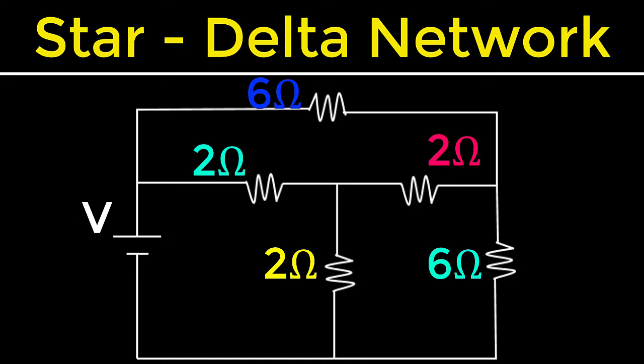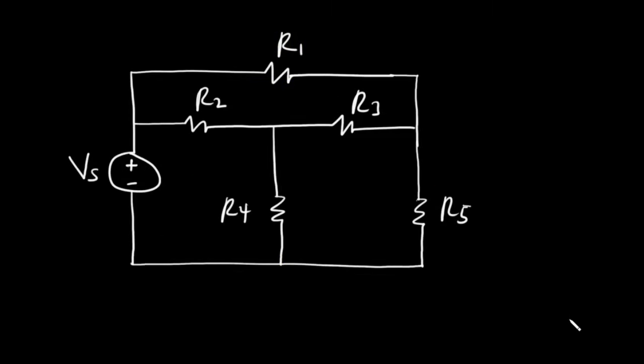We learnt earlier that to find the equivalent resistance for a given circuit, you need to know the type of connection between any two resistors at a time — whether they are connected in series or in parallel. From that, you will be able to calculate the equivalent resistance for that particular circuit. However, such is not the case at all times. At certain instances, you may have circuits where no two resistors can be identified to be in either series or in parallel.